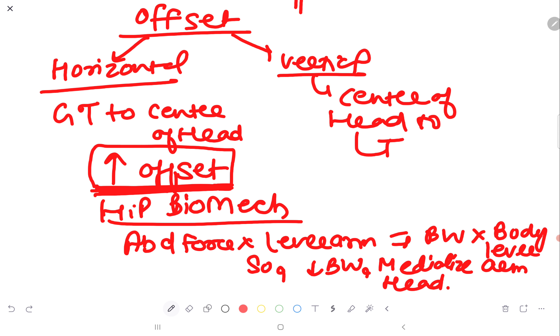Now there is offset. What is the offset? There is horizontal offset and vertical offset. Horizontal offset is distance between GT to center of head. Vertical offset is center of head to the lesser trochanter.